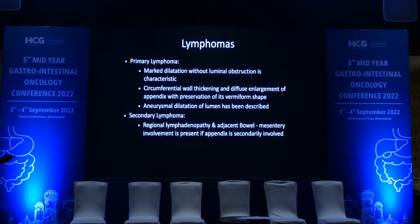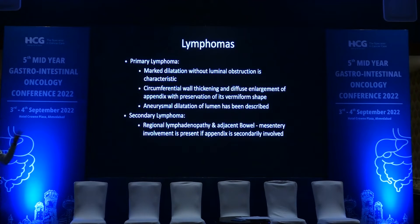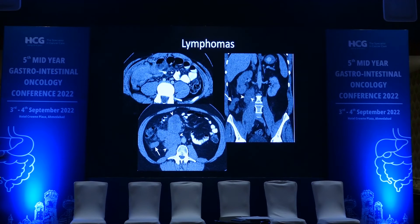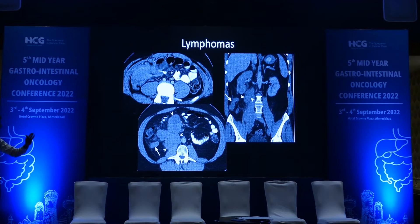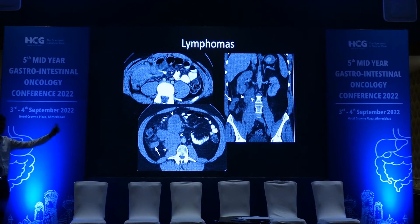Primary lymphomas of the appendix most of the time appear like aneurysmal dilatation with circumferential wall thickening — these are submucosal diseases. Secondary lymphoma is where the involvement of the appendix is secondary, not primary — an epicentered lesion within the appendix. Cases shown include biopsy-confirmed Burkitt's lymphoma in the first image, and two cases where the primary lesion was in the mesentery and terminal ileum with encasement and secondary deposit of the appendix. So the first image is a primary lymphoma; the remaining two are secondary lymphomas.